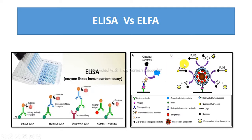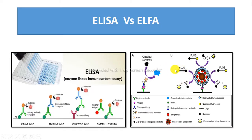not a color reaction. So mainly it involves fluorescence. The window period of ELISA is longer as compared to the window period of ELFA. In ELFA, the window period is about five days, which is shorter than ELISA.